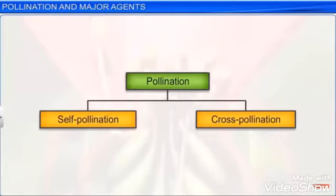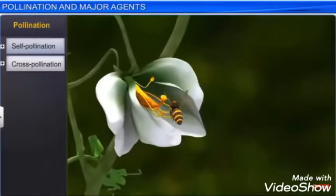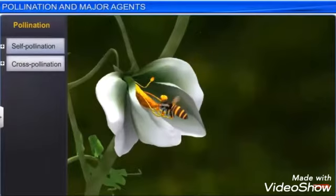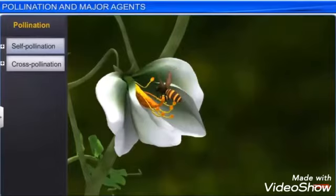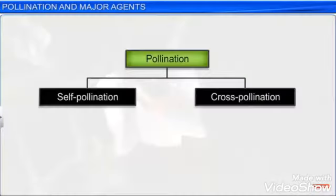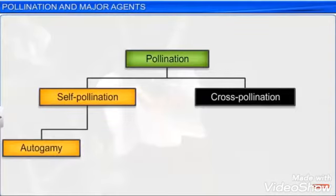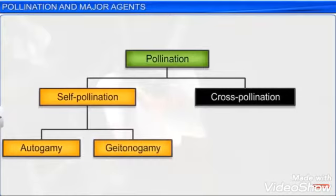Two types of pollination exist: self-pollination and cross-pollination. Self-pollination is generally called autogamy, in which flowers are bisexual and pollen grains from one flower settle on the stigma of the same flower on the same plant. Self-pollination has two major subtypes: autogamous and geitonogamous.